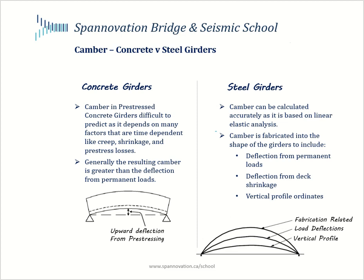Let's delve into some basic details regarding camber for both concrete and steel girders. Focusing first on concrete girders — these are pre-stressed, including both pre-tensioned and post-tensioned concrete girders. The visual on the bottom shows a simply supported girder with pre-stressing closer to the bottom flange. Assuming the neutral axis is at mid-depth, this pre-stressing has a certain eccentricity.